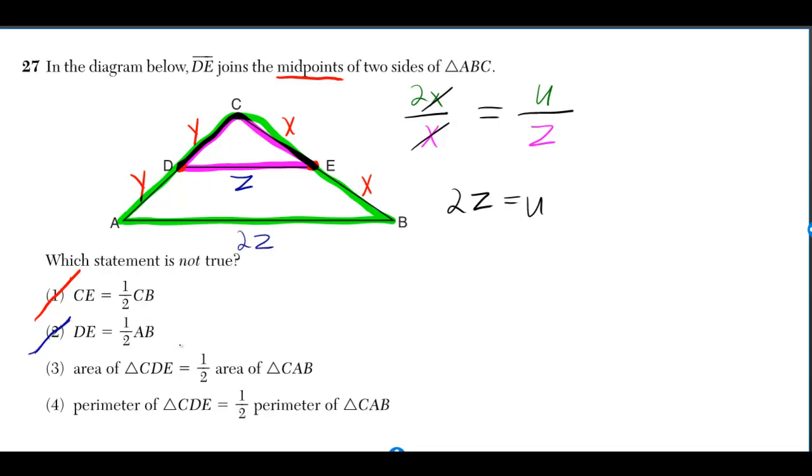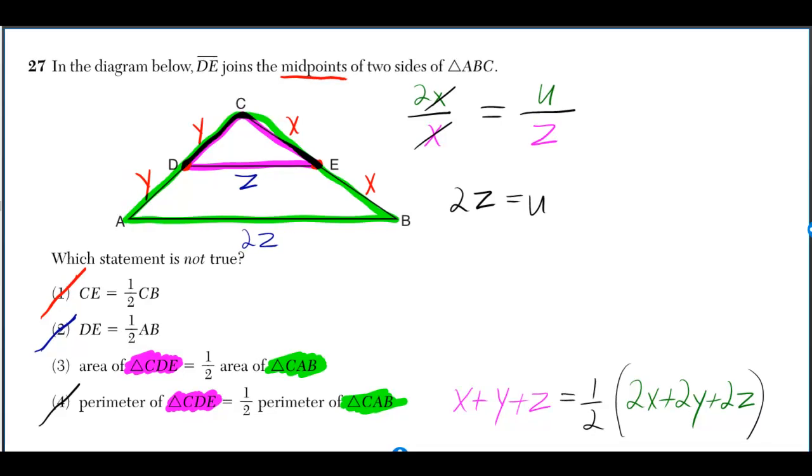So number 2 is not the answer. Number 4 asks if the perimeter of CDE is equal to half the perimeter of CAB. But X plus Y plus Z is equal to half of 2X plus 2Y plus 2Z. So that one's also correct. However, the area of CDE is not one-half the area of CAB.